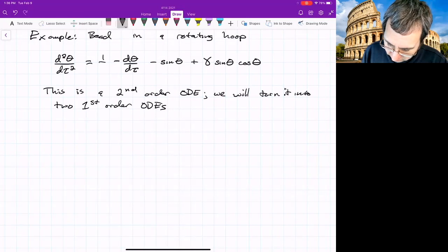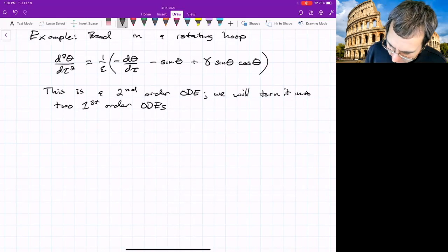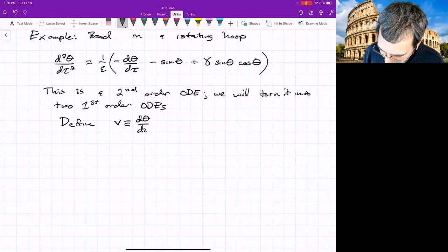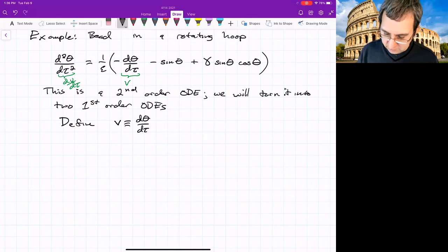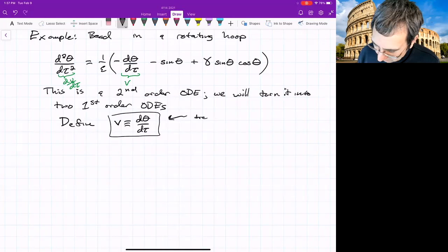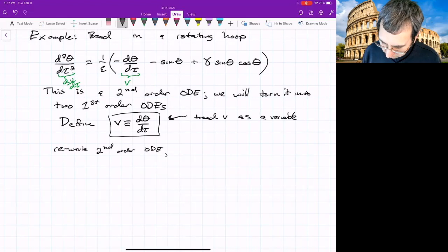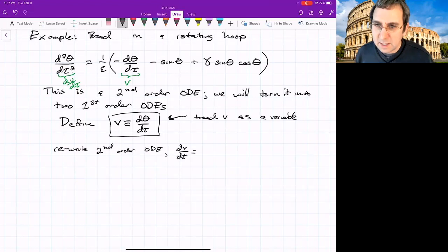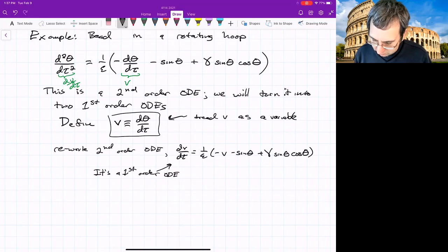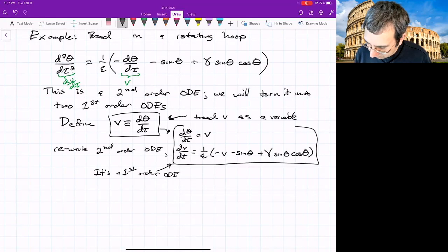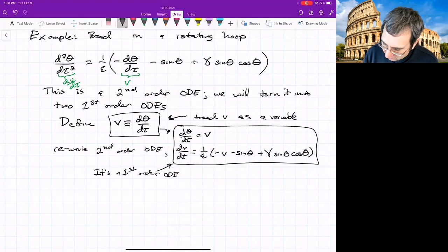The first thing we might do is move this epsilon over to the other side. So we've got one over epsilon. And we define V as being d theta d tau. So that makes this thing equal to V. And then this is d V d tau. So in some sense, this definition also gives us our first ODE. We treat V as a variable. We rewrite the second order ODE. What do we get there? d V d tau is 1 over epsilon minus V minus sine theta plus gamma sine theta cosine theta. And now it's a first order ODE. And this definition, we just rewrite it. It's d theta d tau equals V.